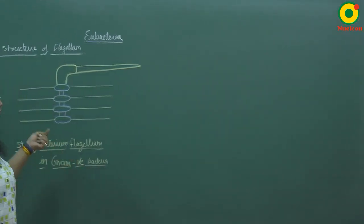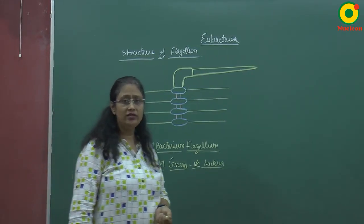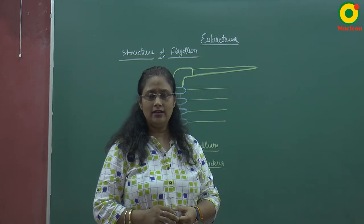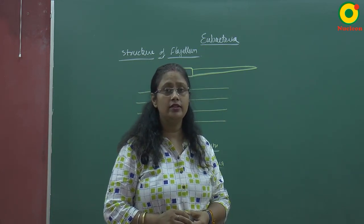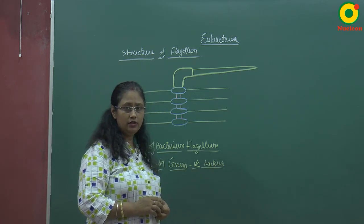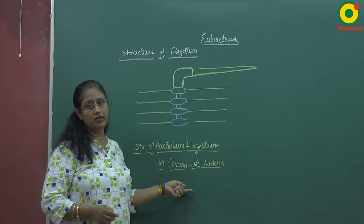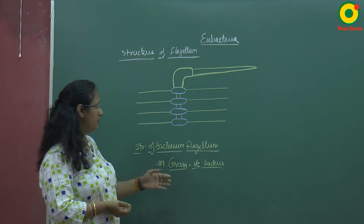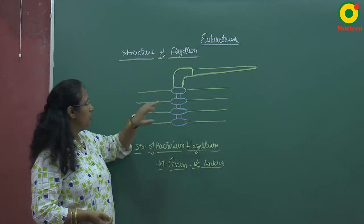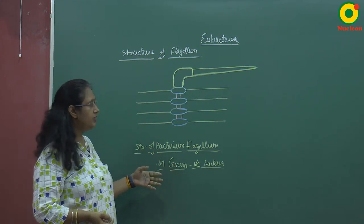Now let's see the structure of flagellum. Flagella are protoplasmic growths present in numerous bacteria for swimming in aquatic media. Some flagella contain antigenic properties — for example, in Salmonella, flagellum contains antigenic properties. The flagellum structure of gram-negative bacteria has four rings, while gram-positive bacteria have only two rings. Flagella are basically divided into three parts: basal body, hook, and shaft or filament.